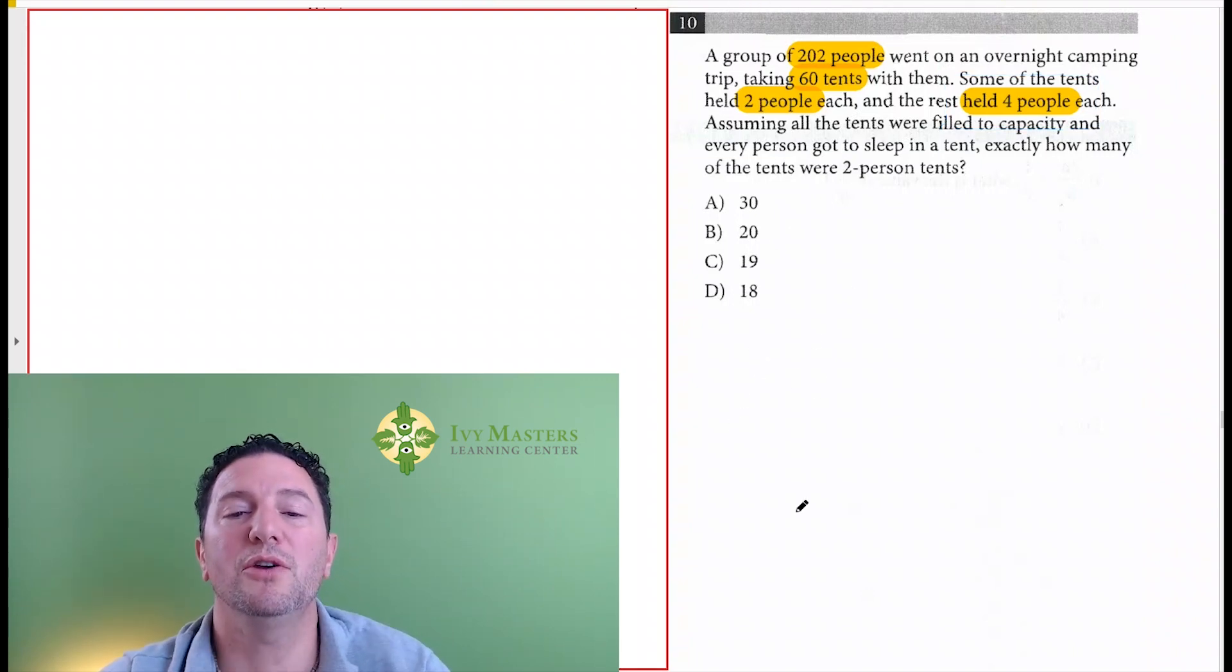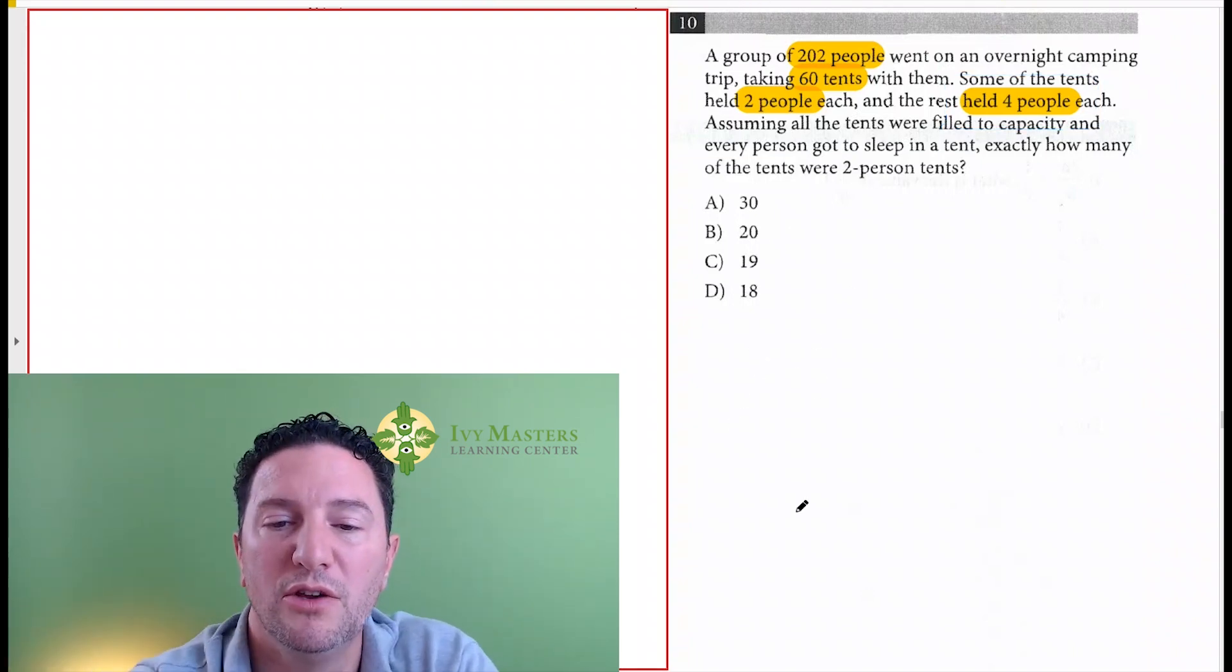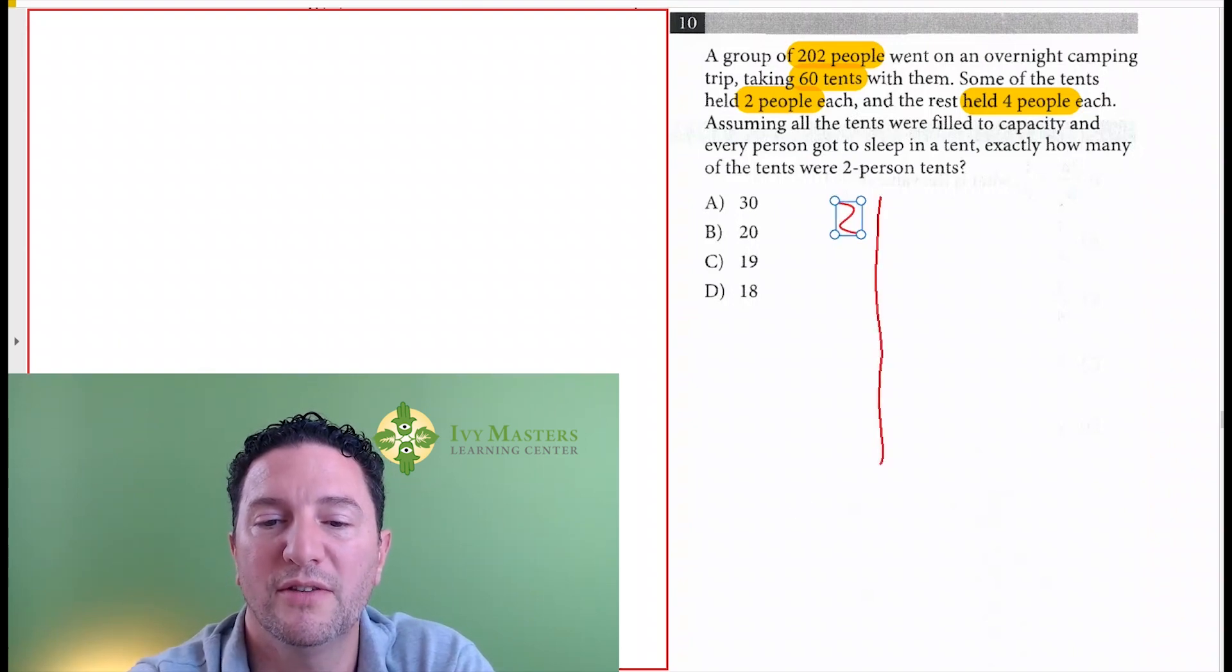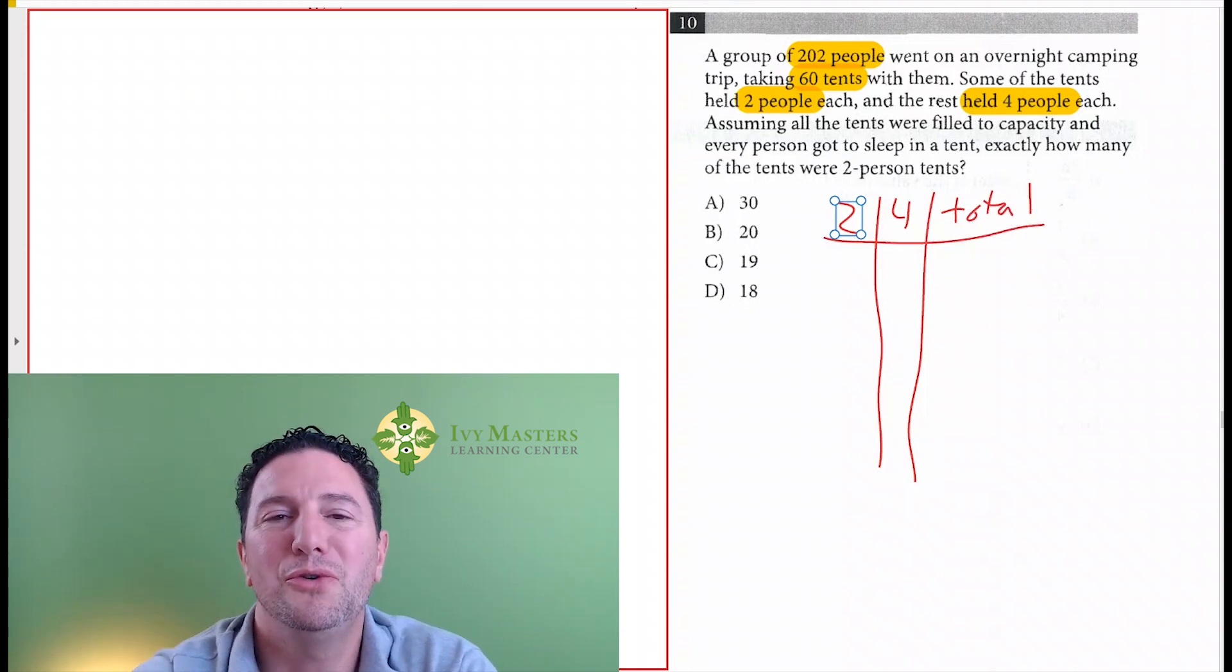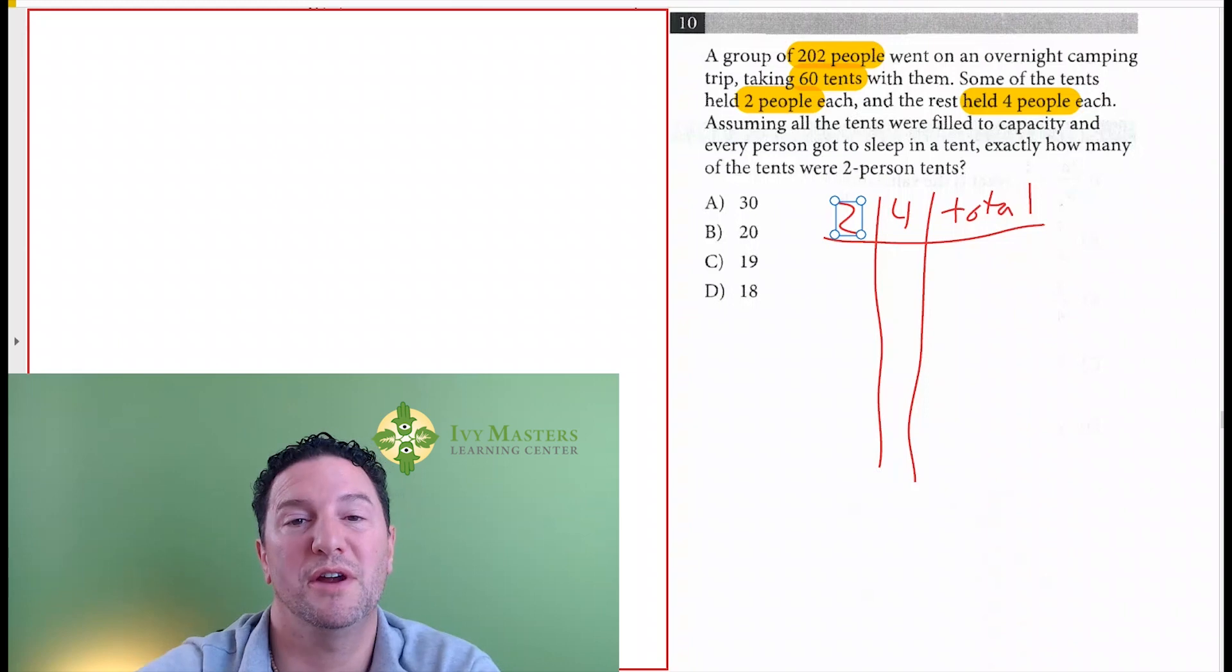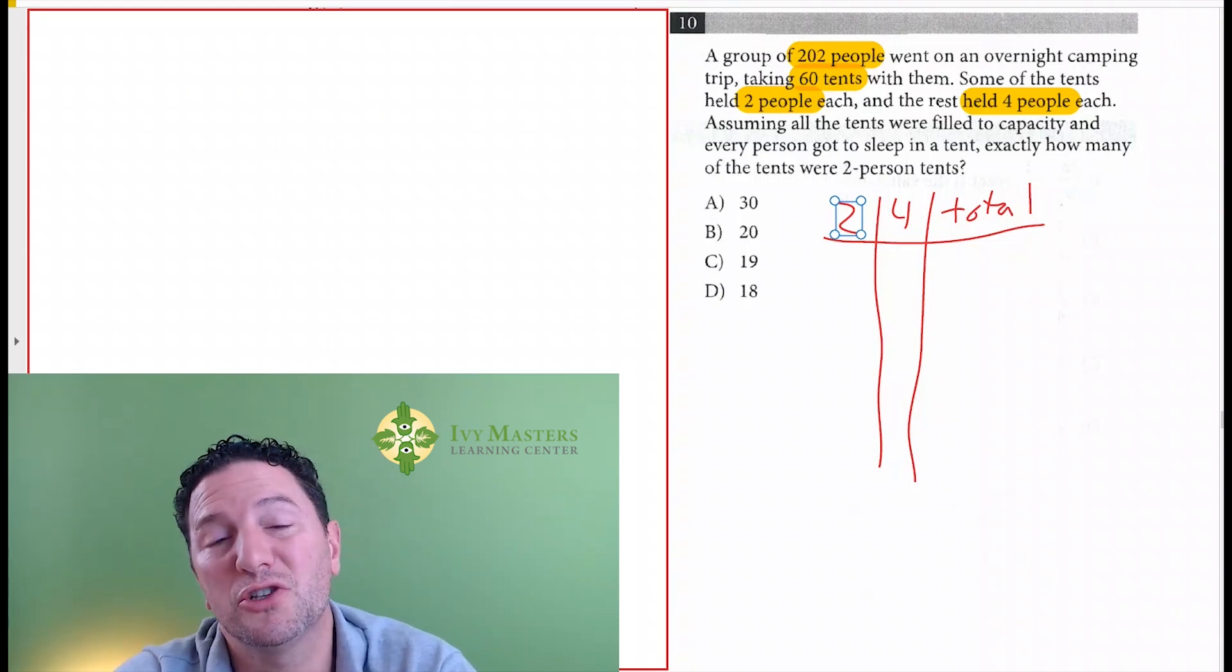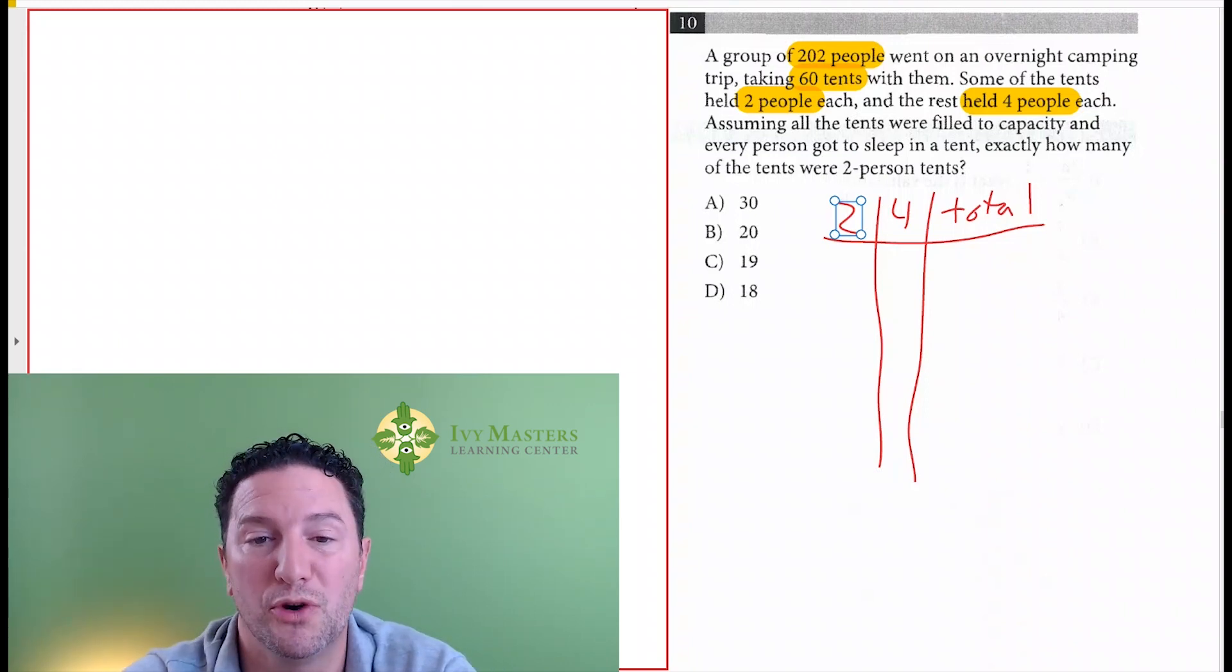So one thing you can do is make a table here. You can make a column for two-people tents, a column for four-people tents, and a column for the total number of people. You want to do this in conjunction with using your answer choices. If you do it in conjunction with using your answer choices, it's going to be much more efficient.